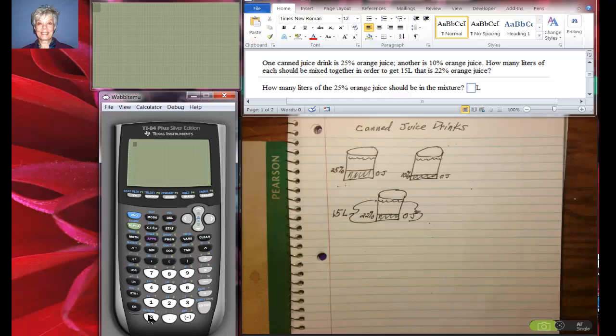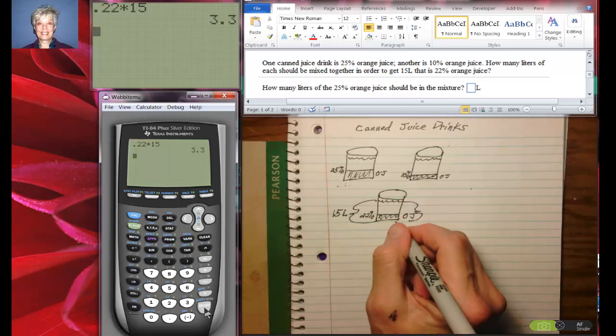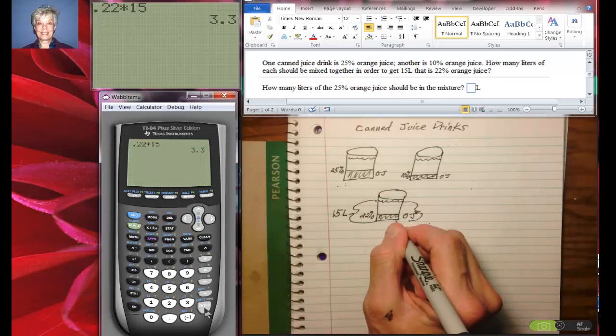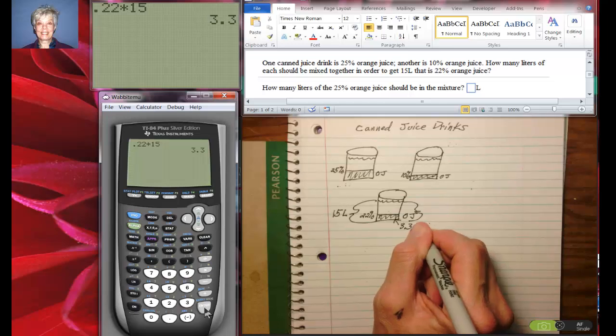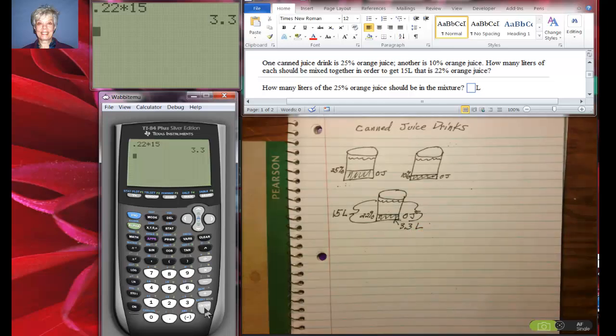We're going to say 22% that's 0.22 times 15, enter. That'll be 3.3. So the amount of orange juice in here is going to be 3.3 liters and the rest of it is going to be something else.